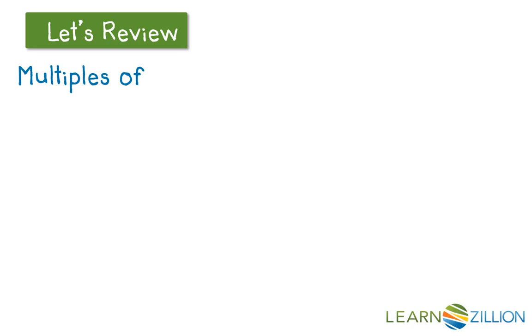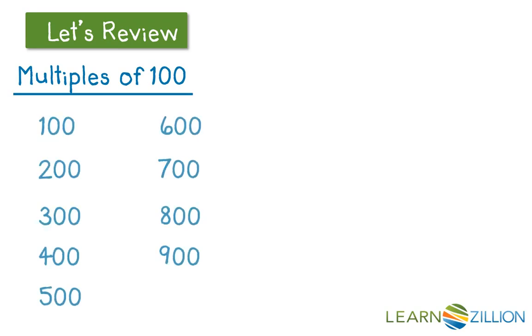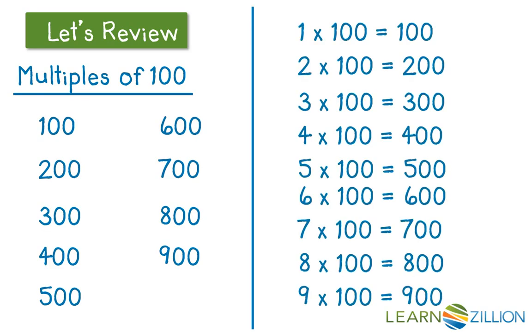Multiples of 100 all end with at least two 0s. Any multiple of 100 can be written as a number times 100. For example, 2 times 100 equals 200, 3 times 100 equals 300, and so on.